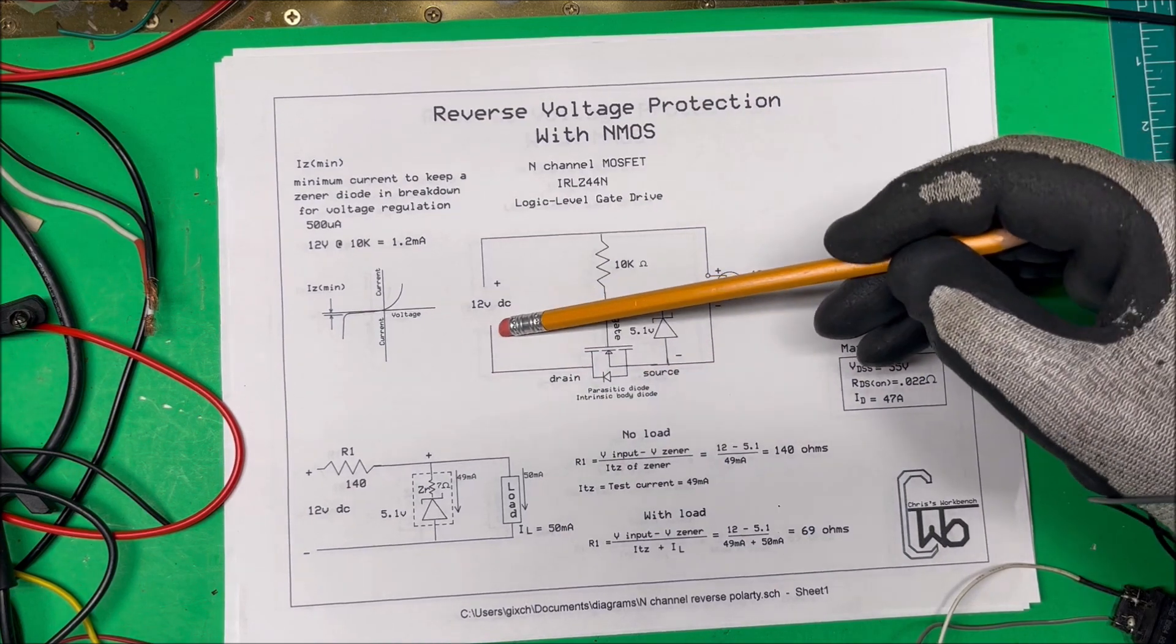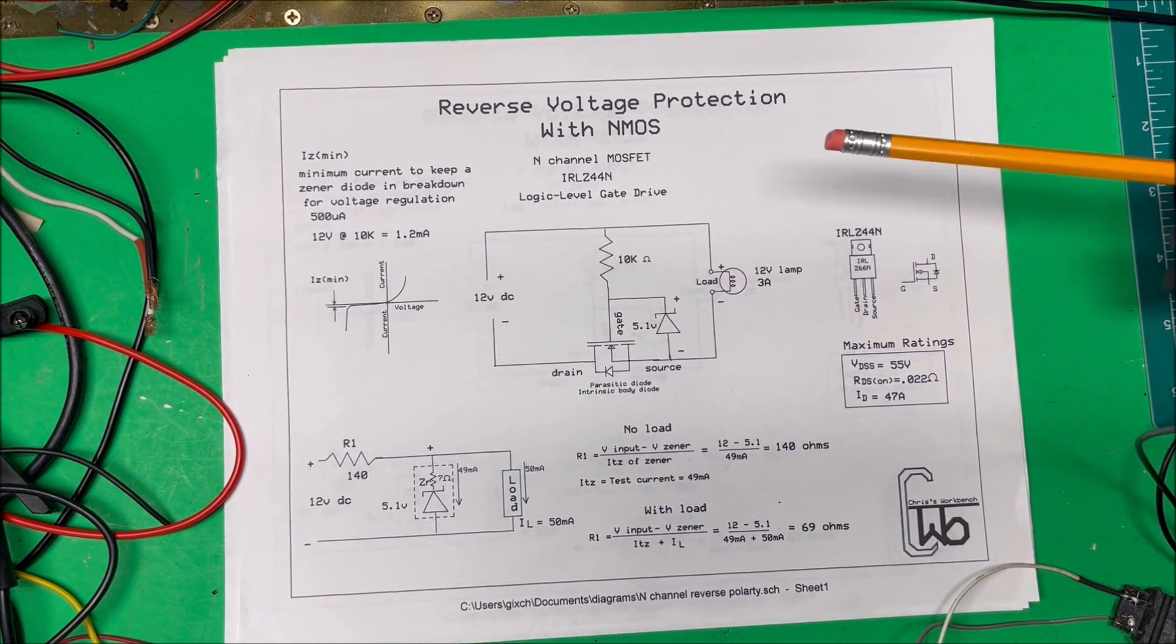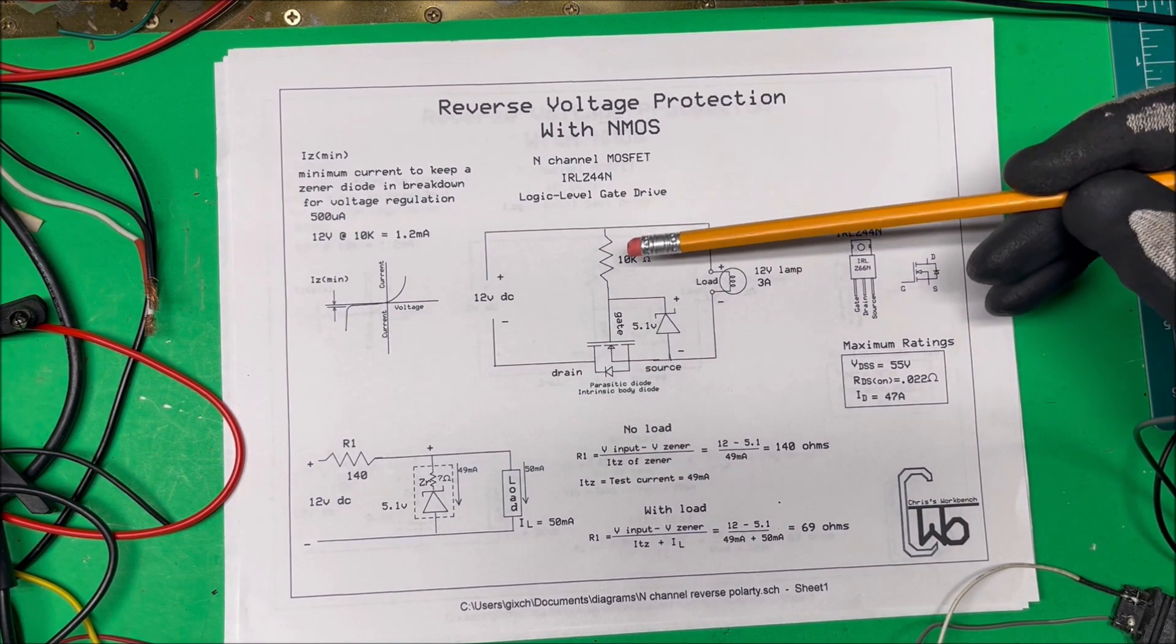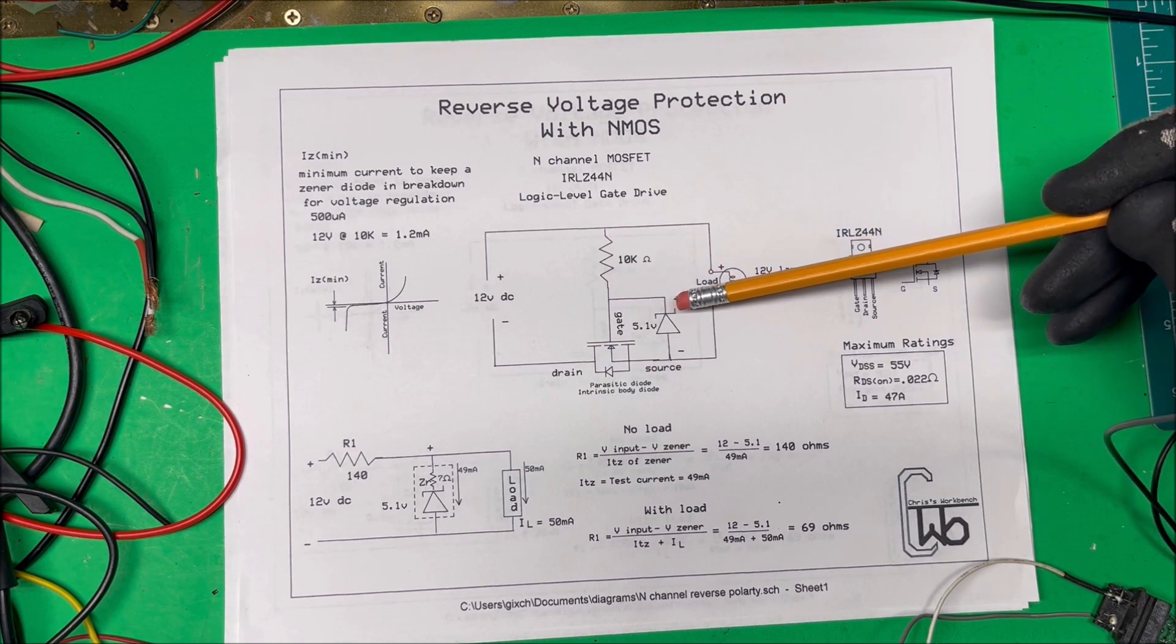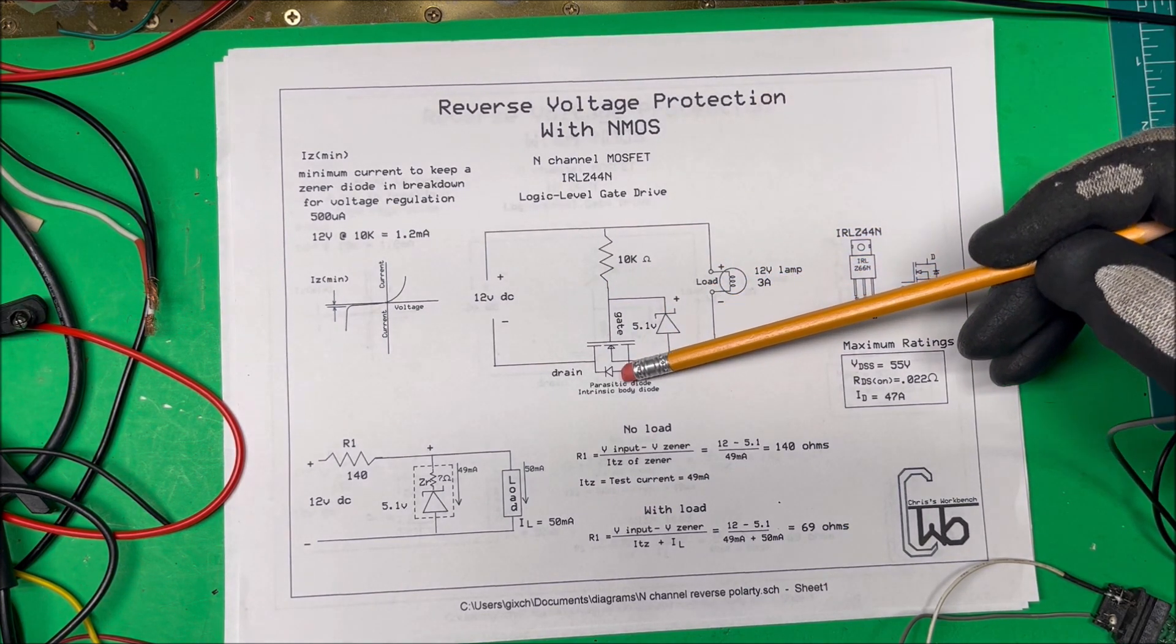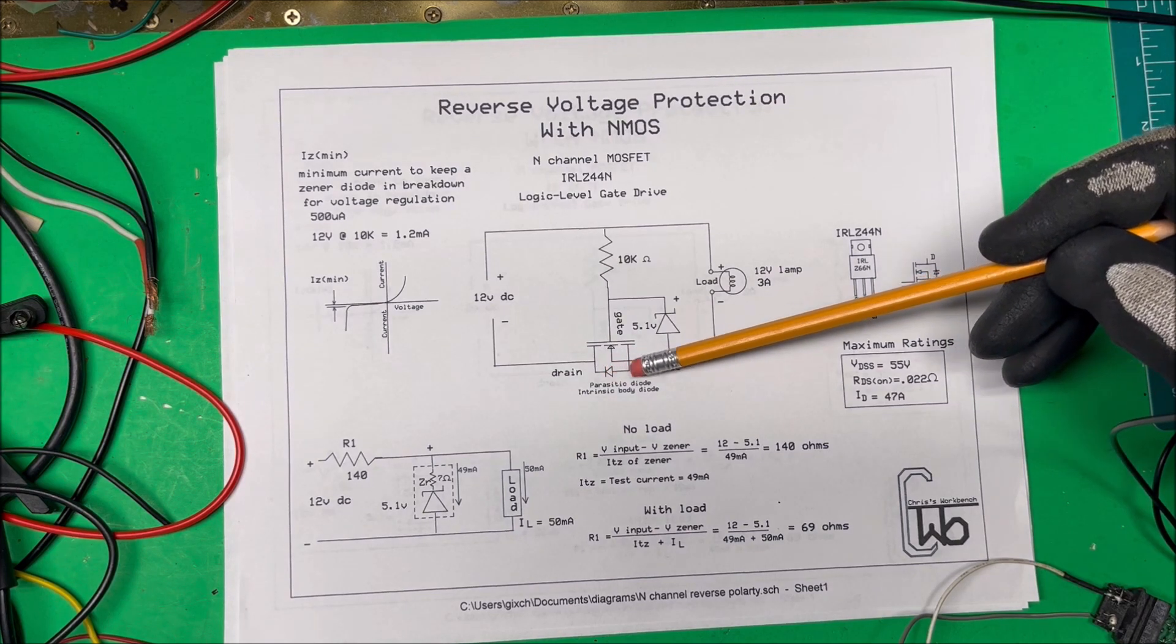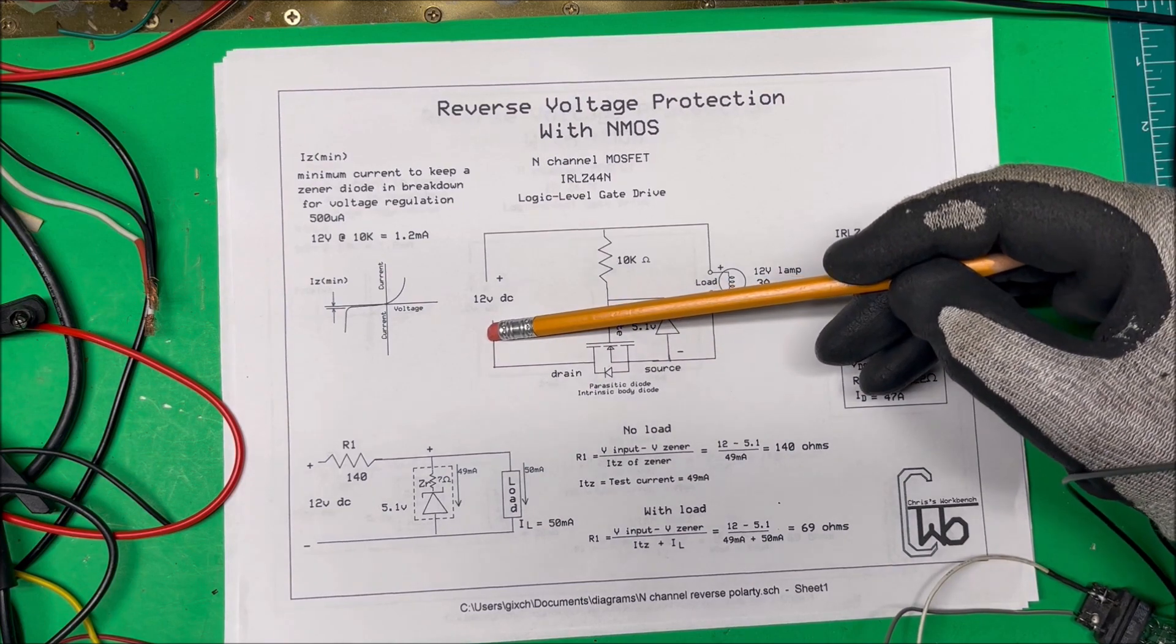We take our drain and we tie it to negative and the source is over here tied to the load. Now how this is going to work, we have our positive up here, comes through our 10k ohm resistor here through the Zener diode and then it goes back through this parasitic diode or the intrinsic body diode back to ground over here.